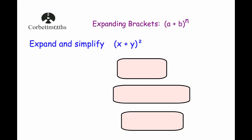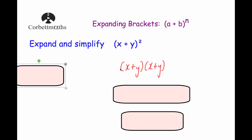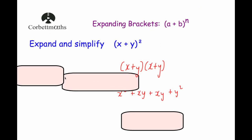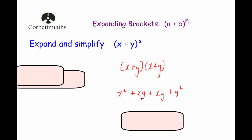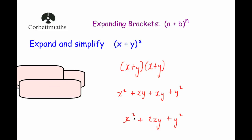First, we're going to expand x plus y to the power of 2, or x plus y squared. To do that, I would write x plus y times x plus y, then expand by using FOIL: x times x, x times y, y times x, and y times y. That gives x squared plus xy plus xy plus y squared, which simplifies to x squared plus 2xy plus y squared.